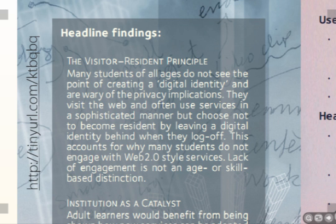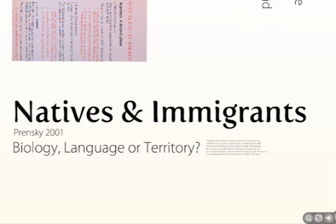As soon as I say Visitors and Residents, many people will think of Prensky's principle — Natives and Immigrants — which he proposed in 2001, which is a long time in terms of the web. The question with the Natives and Immigrants principle really is: is that something to do with biology? Is it to do with the way our brains are wired and how that may or may not be changing? Is it to do with language, or is it to do with some sort of sense of territory?